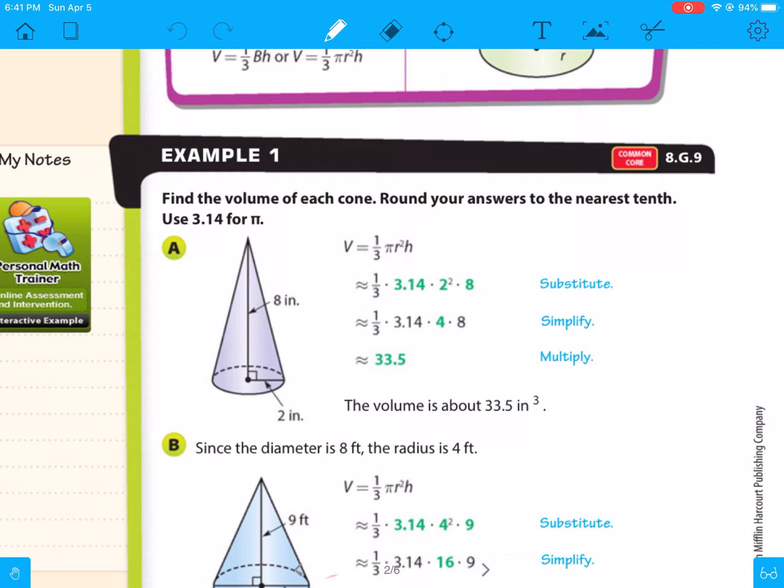So if you look here, for example one, it says find the volume of each cone. Round your answers to the nearest tenth. Use 3.14 for pi. So our volume equals pi 3.14 times radius squared, which here is 2, 2 squared, times your height, which is 8, and then divide that all by 3.